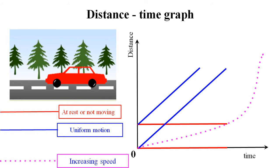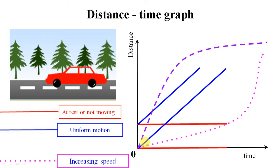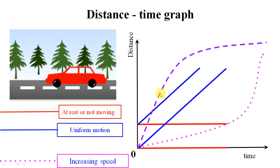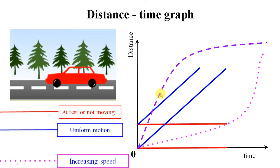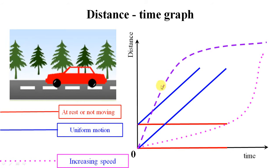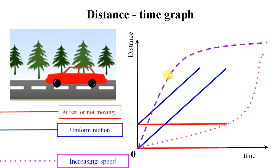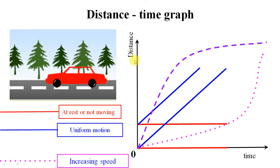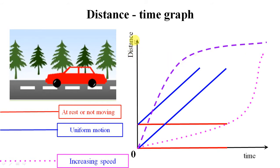Let's have a look at the final case. The body initially travels at uniform speed, indicated by the straight line, and then later the body is decreasing its speed. The body took a lot of time to cover a very short distance.